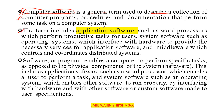The term includes application software — such as a word processor — which performs productive tasks for the user. Kindly remember these parts directly, as they will be asked in the examination. Application software is for general purposes, like a word processor, which performs tasks for the user.